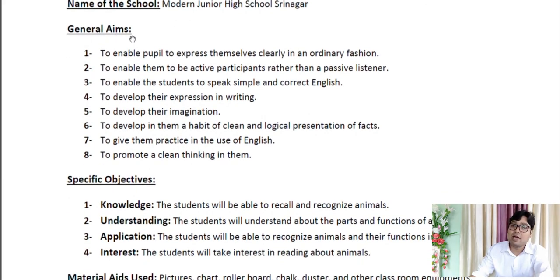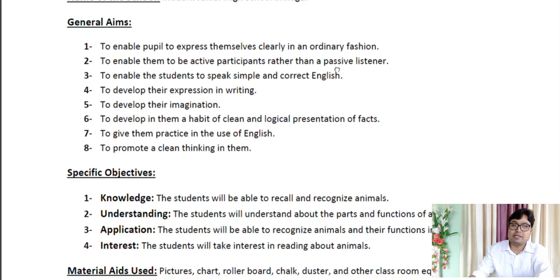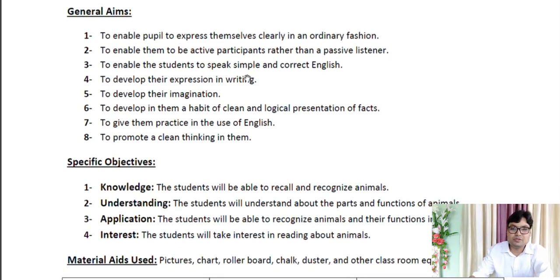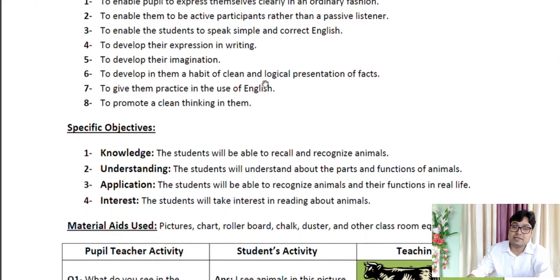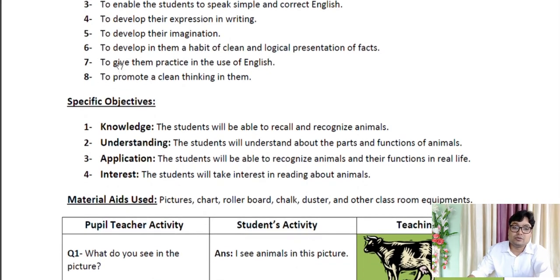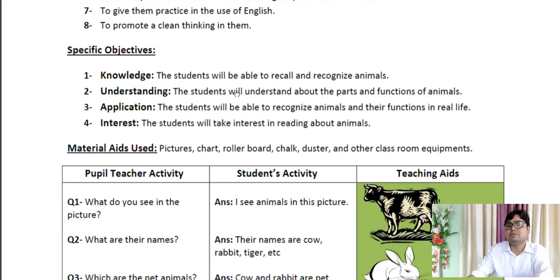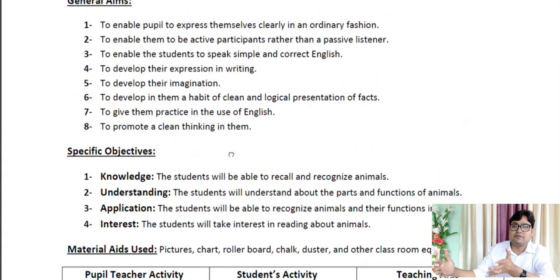Now let's come to General Aims. These aims have already been discussed in our previous lectures, so we will go through them quickly. The aims include: to enable pupils to express themselves clearly in an ordinary fashion; to enable them to be active participants rather than passive listeners; to enable students to speak simple and correct English; to develop their expression in writing; to develop their imagination; to develop a habit of clean and logical presentation of facts; to give them practice in the use of English; and to promote clear thinking. These are long-term aims decided for a year or a longer period.